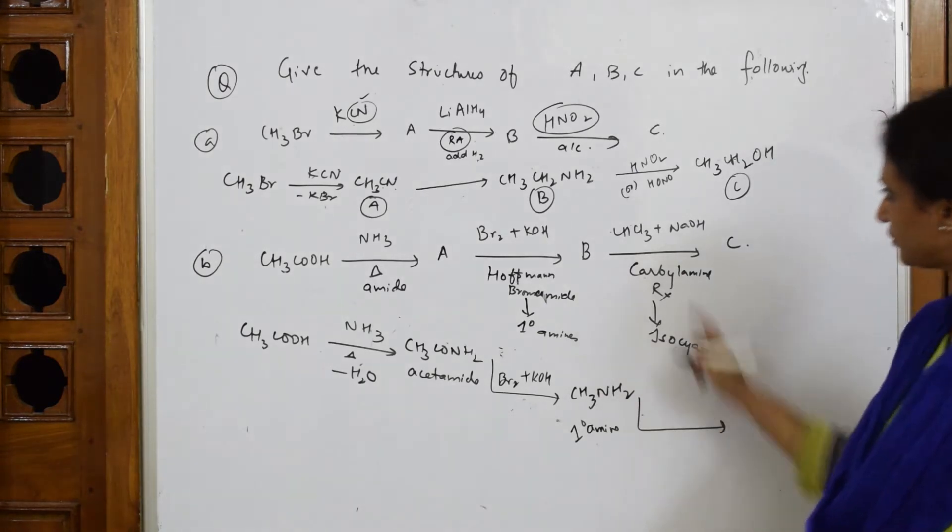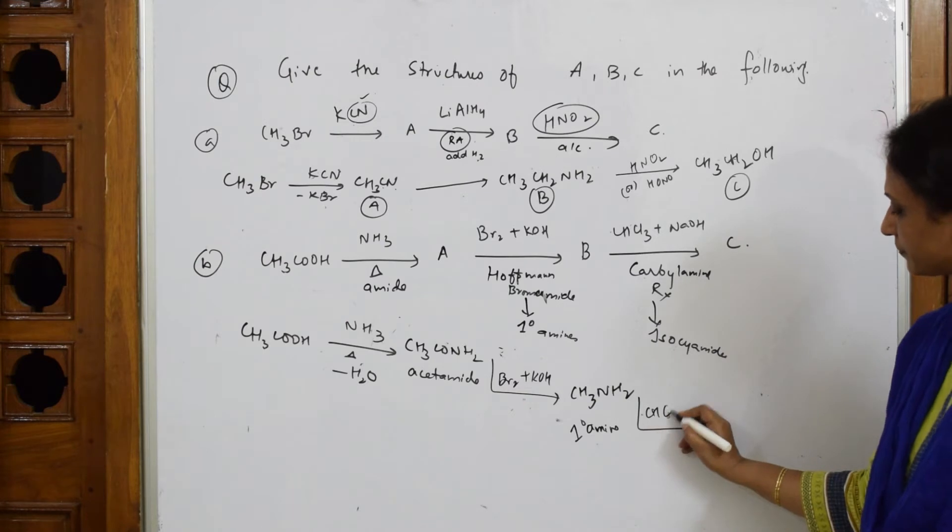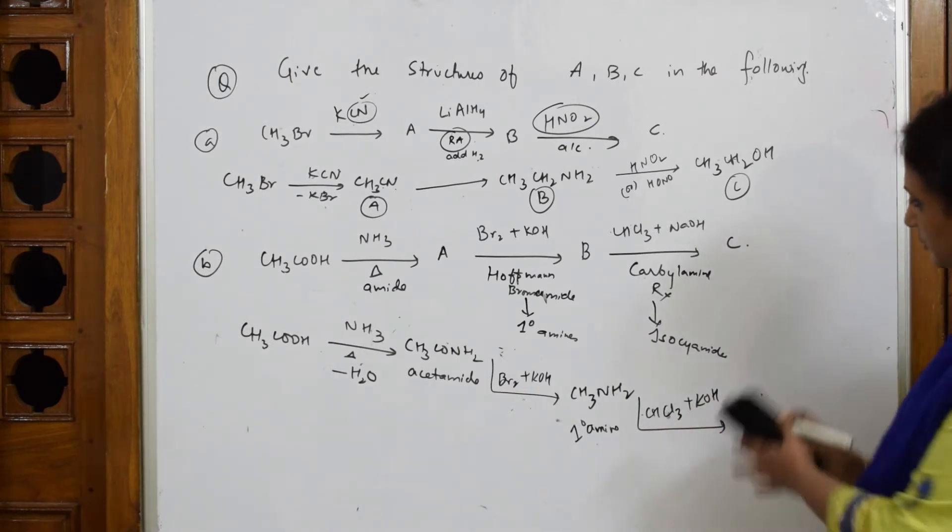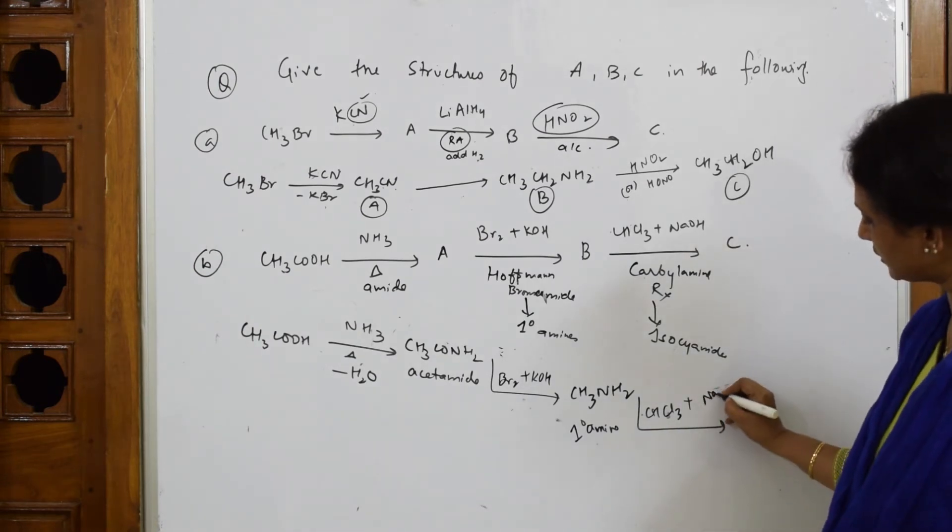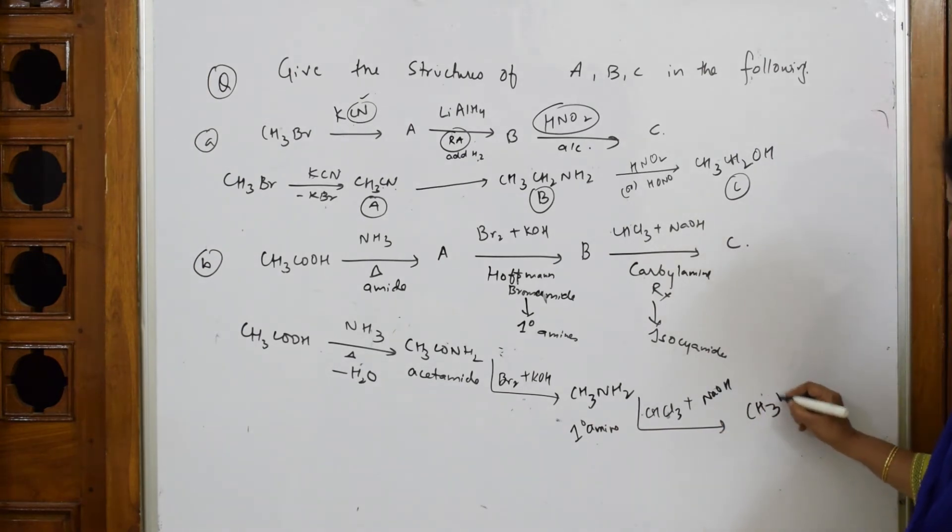After this, what are we going to do? We are going to take chloroform plus KOH. So chloroform and NaOH, carbylamine reaction. This is going to get converted to CH3NC - isocyanide, methyl isocyanide. This is how you're going to do your question.